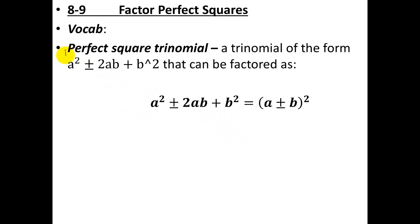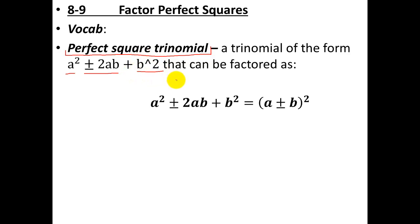First, the vocab word: what is a perfect square trinomial? Trinomial means it has three terms, and perfect square means it's going to have the form a squared plus or minus 2ab plus b squared. And so it can be factored. This is the equation or formula that you want to know.